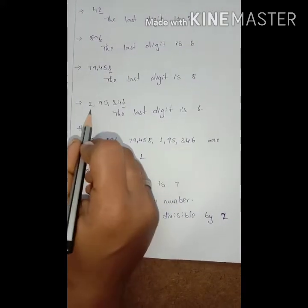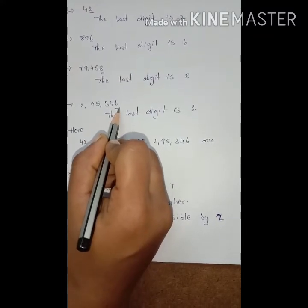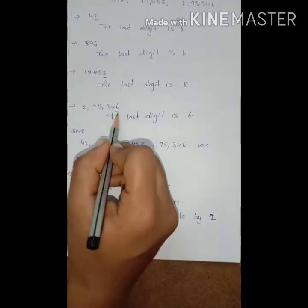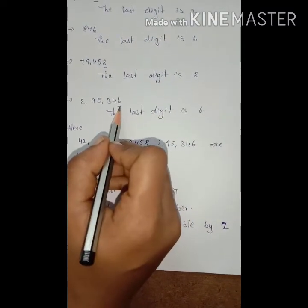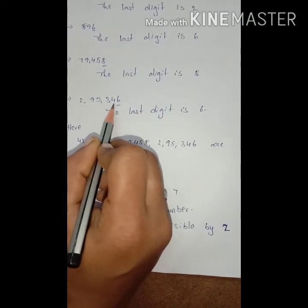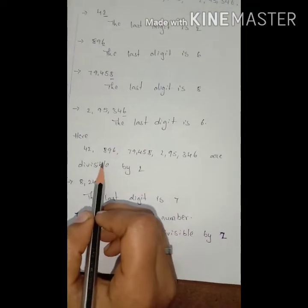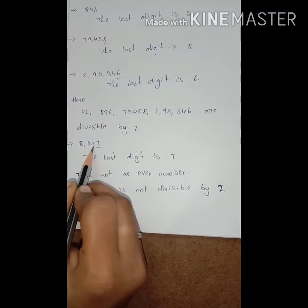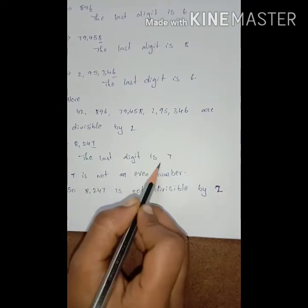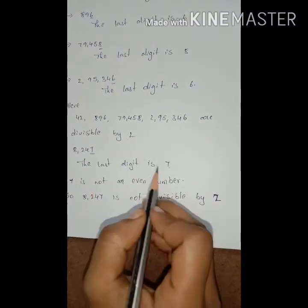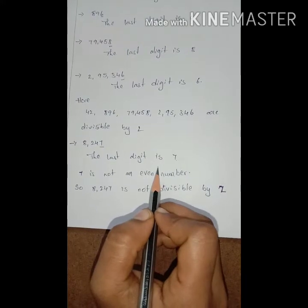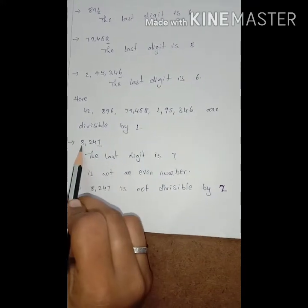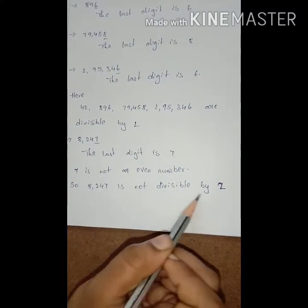The next one is 2,95,346. The last digit is 6, which is an even number, so 2,95,346 is divisible by 2. All these examples are divisible by 2. Now let's look at 8,247. The last digit is 7. Is 7 an even or odd number? 7 is an odd number. The rule says the last digit must be even, so 8,247 is not divisible by 2.